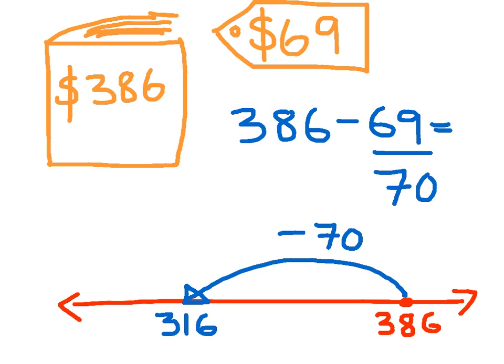But the question doesn't ask me to take away 70, it asks me if I would kindly take away 69. And I haven't taken away 69, I've taken away 70, so I've taken away one more than I need to. So what I'm going to do is I'm just going to jump back here and add that one too many on.